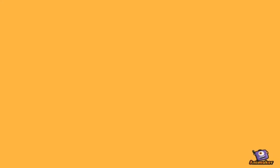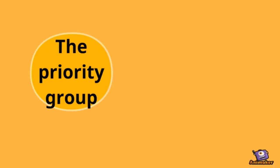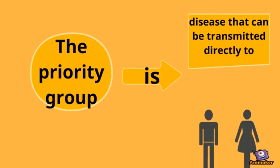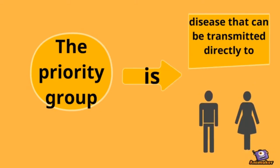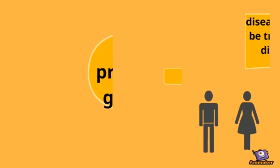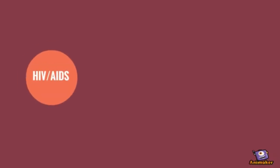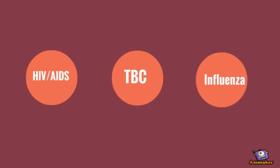The priority group in drug development is contagious diseases that can be transmitted directly to other people. Examples of these diseases are HIV, AIDS, tuberculosis, and influenza.